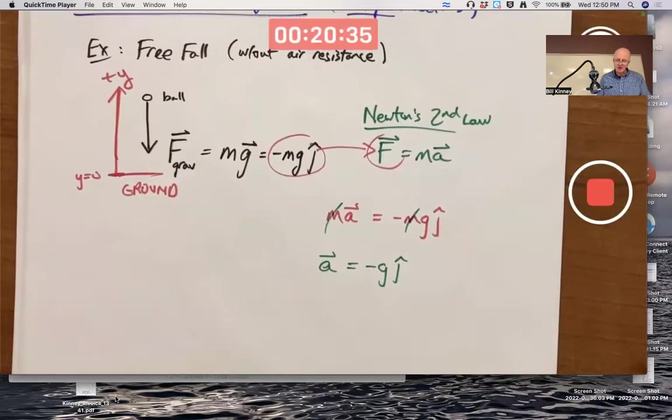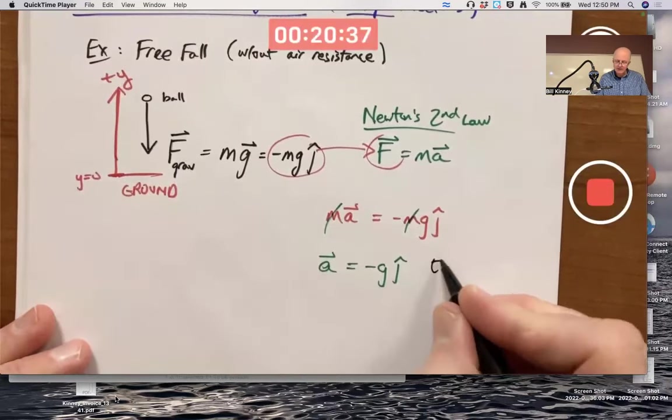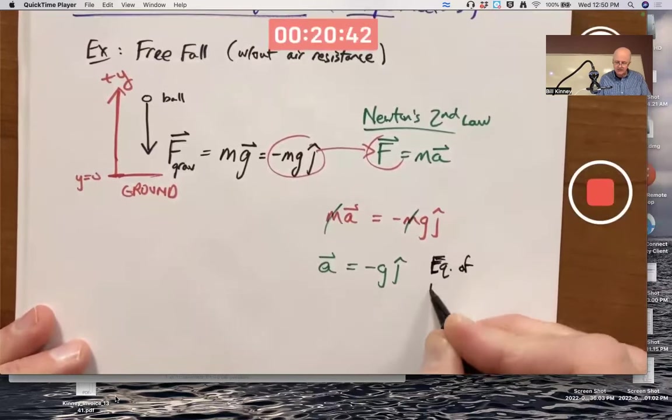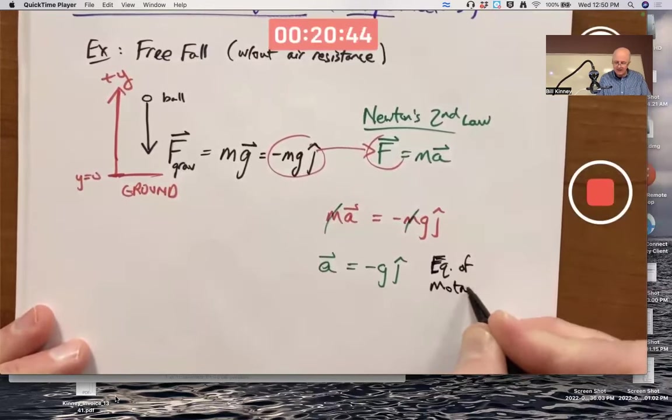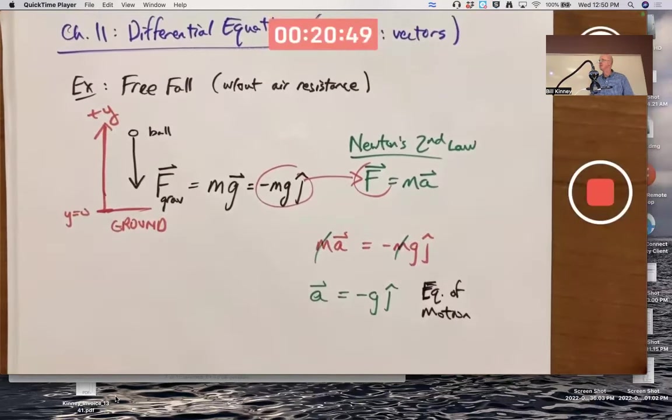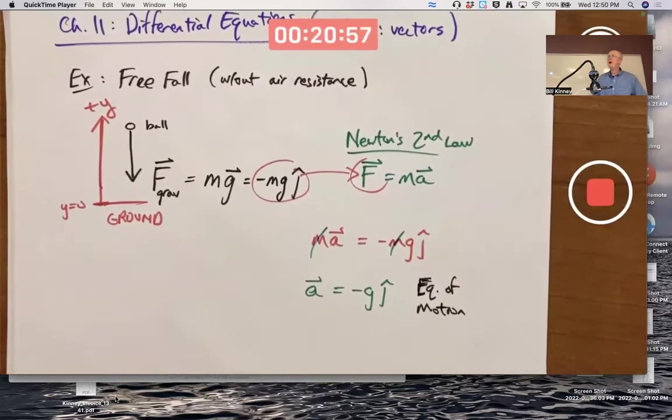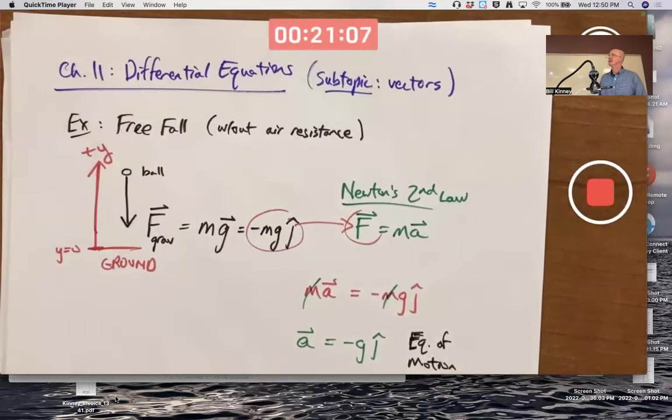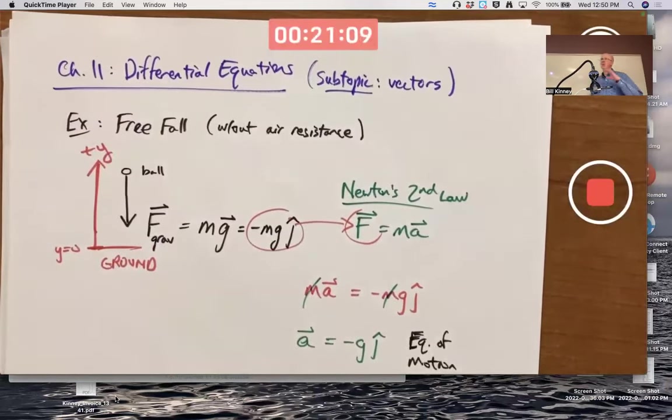So I get the vector A, the acceleration vector, is negative G times J hat. This is called the equation of motion. The equation of motion is actually a differential equation in disguise. Now, the word differential does make you think calculus.